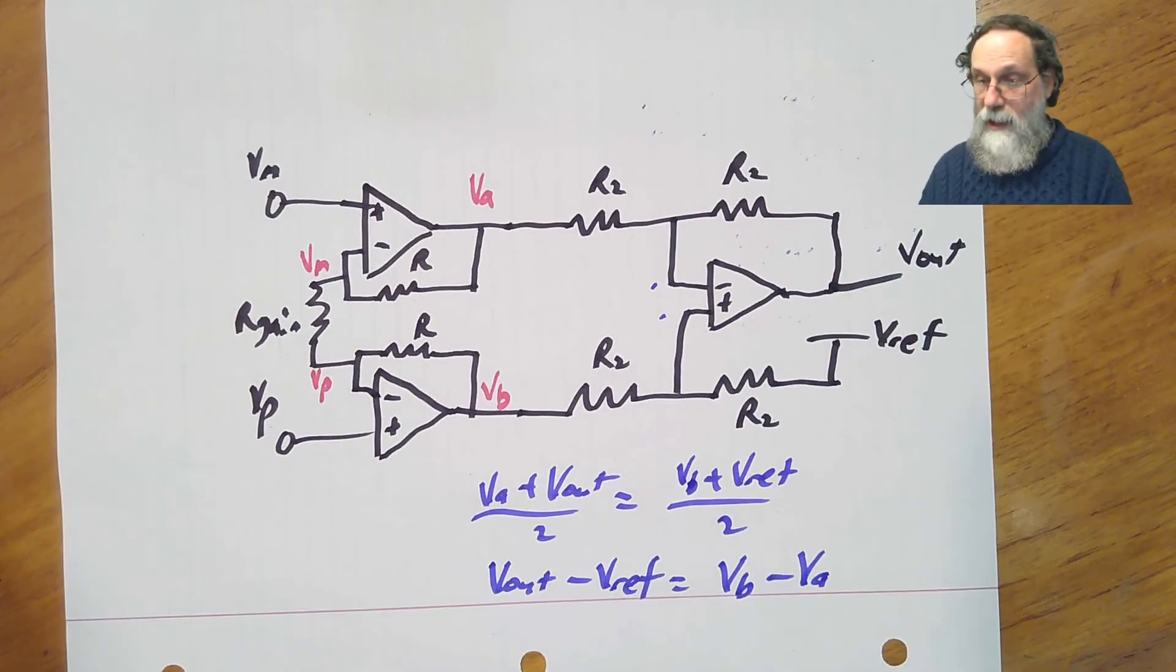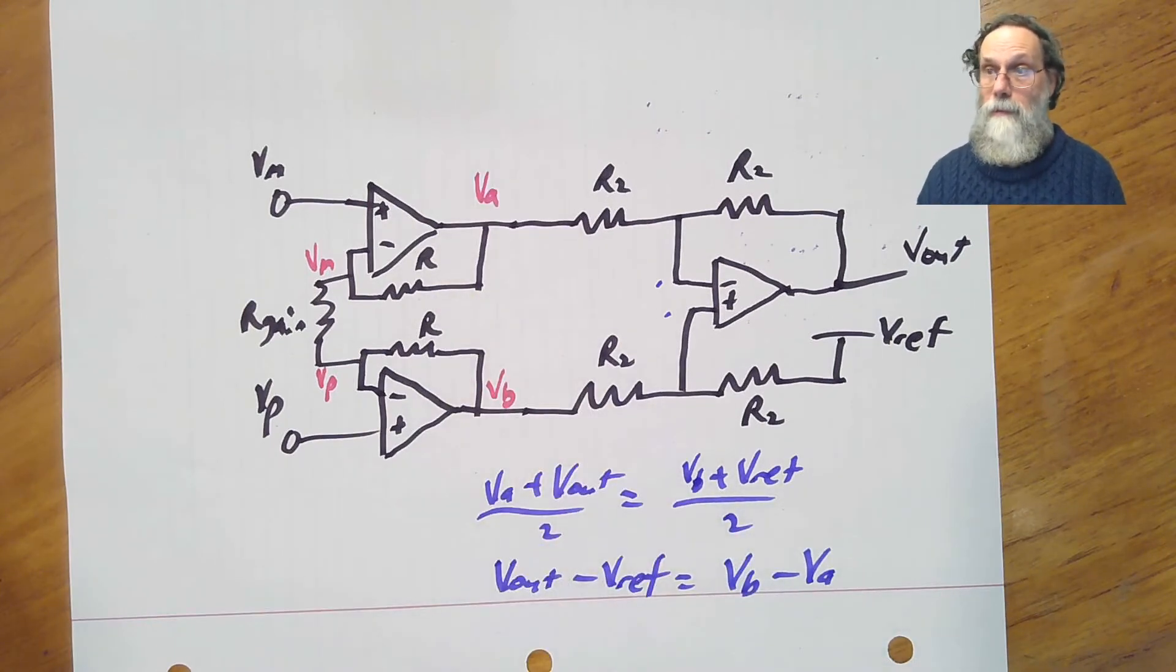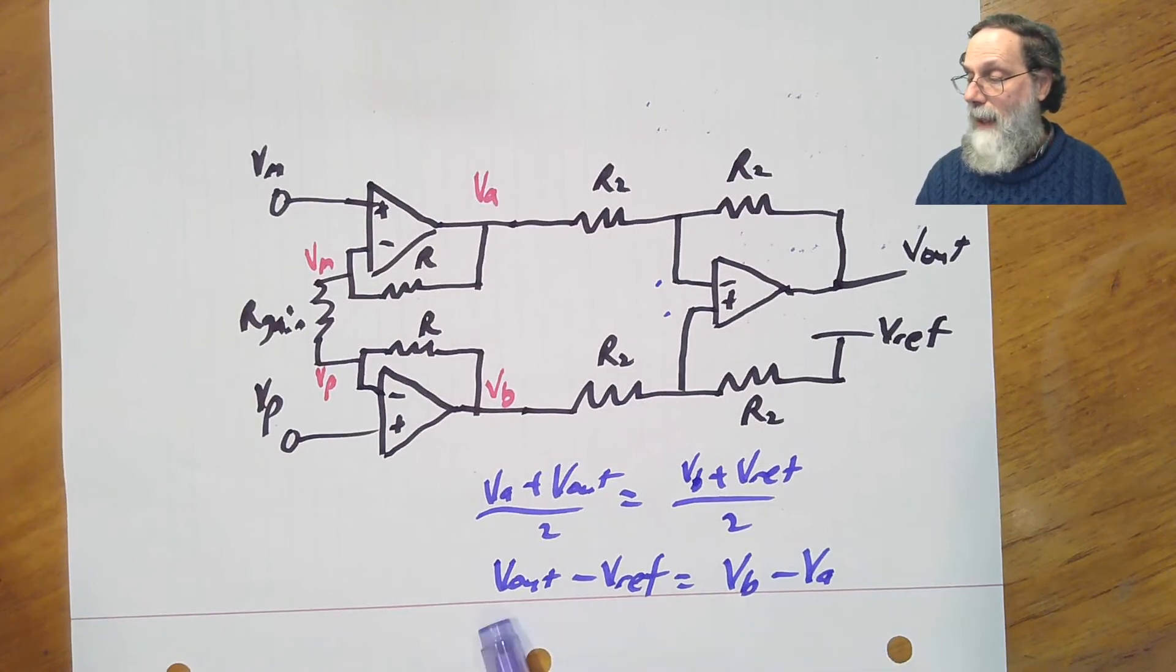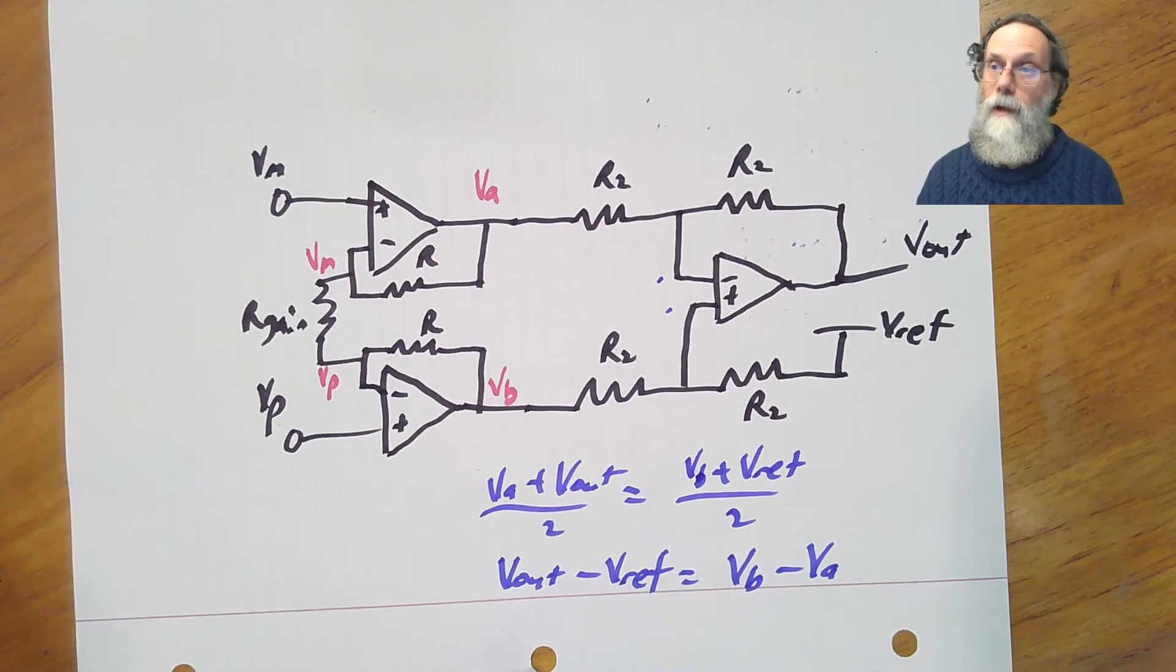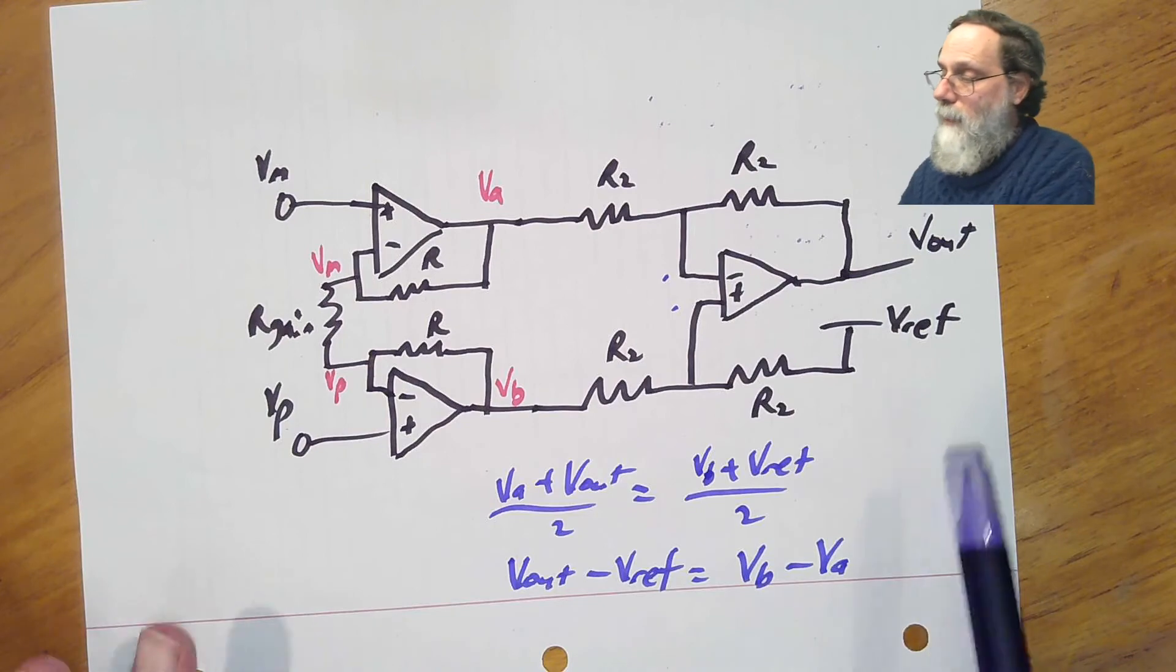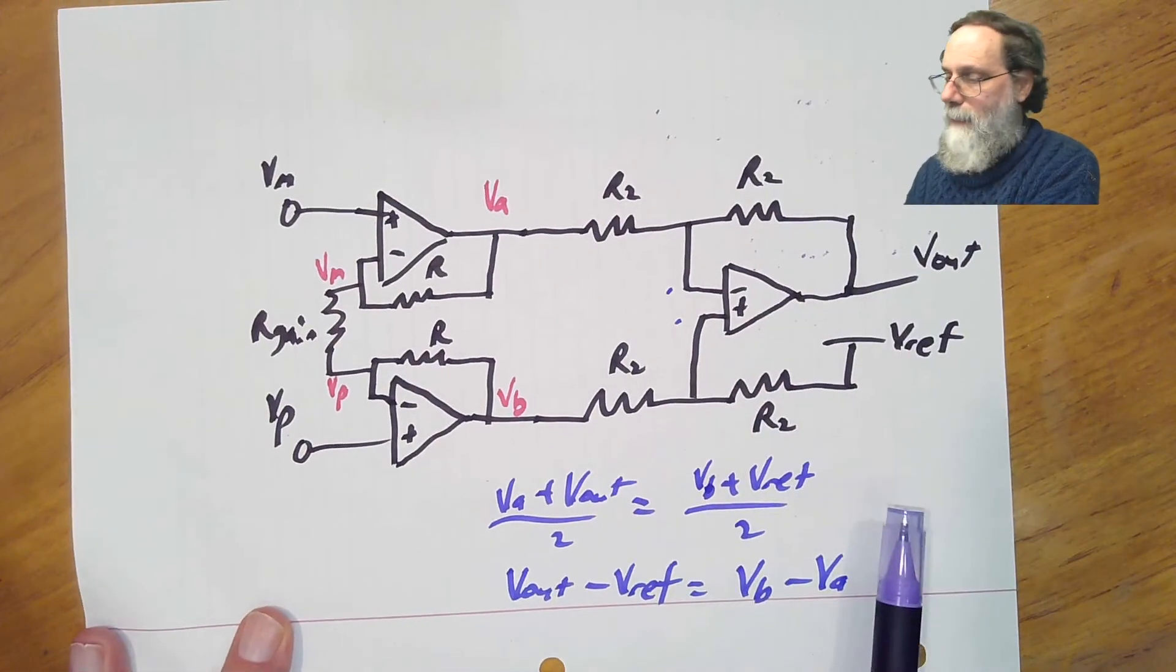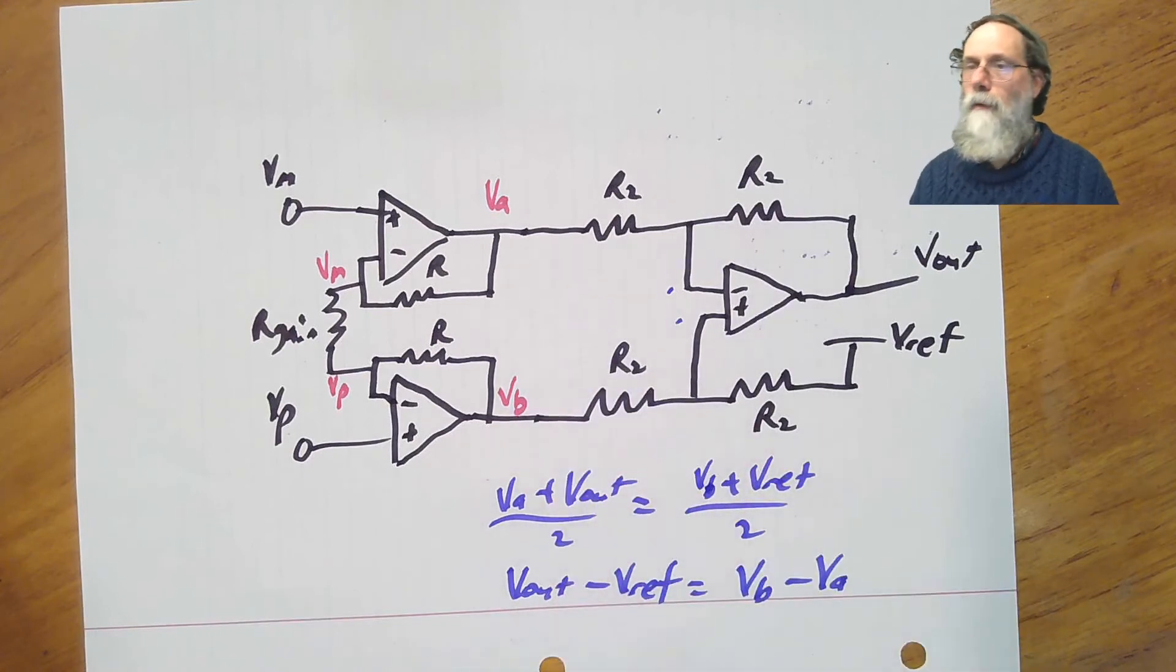And we can simplify that to be Vout minus Vref equals Vb minus Va. What this second stage does is convert that differential signal here, which had a common mode signal in it that we didn't want, into a Vout signal that is centered at Vref. So when Vb is equal to Va, we get just Vref for Vout, getting rid of the common mode and converting it into a single-ended signal. So this is a fairly standard differential to single-ended unit here, where you have four identical resistors.